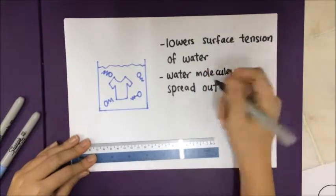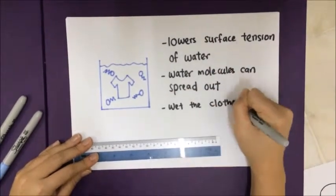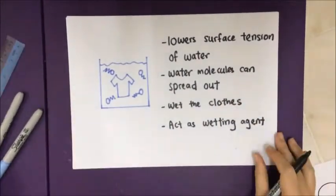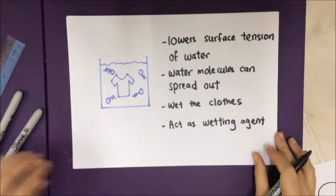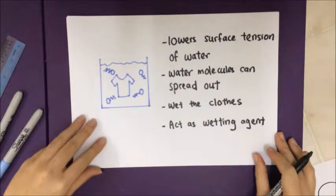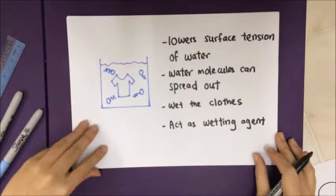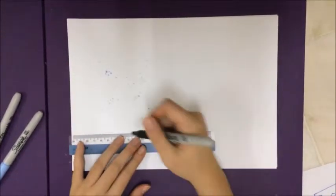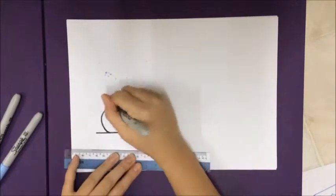Detergent also lowers the surface tension of the solution by decreasing the attraction that water molecules exert on each other, therefore making the water behave wetter. Now we will see the process of cleaning soiled clothes.